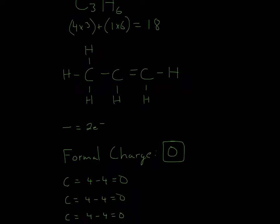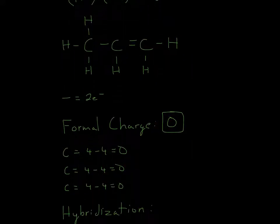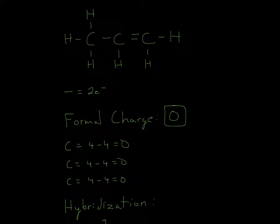Over here, same thing — you just count all the dashes around carbon: 1, 2, 3, 4 dashes. So it'll be 4 minus 4, which was the group number of carbon, so 4 minus 4 is 0. And then finally, the last carbon: 1, 2, 3, 4 — once again the same group number, so 4 minus 4 is 0.